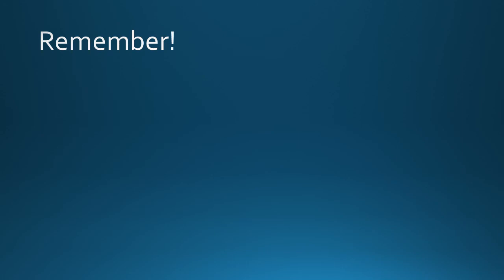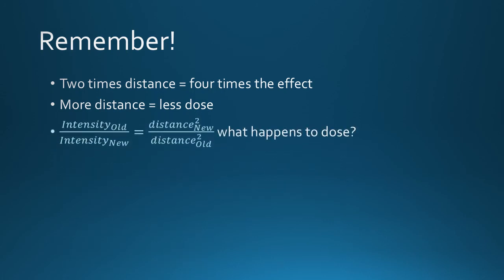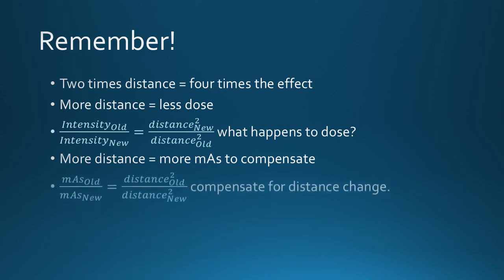Remember, before answering an inverse square law question, always ask yourself: will the answer be larger or smaller than the starting MAS or dose? The inverse square law response is not linear — a two times change has a four times effect. More distance equals less radiation intensity, and the opposite is true. The intensity form of the equation reports what happens to a dose as distance changes. The MAS equation compensates for radiation intensity change, so that MAS is proportional to distance squared.